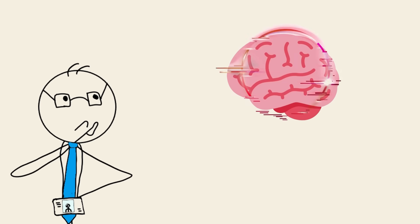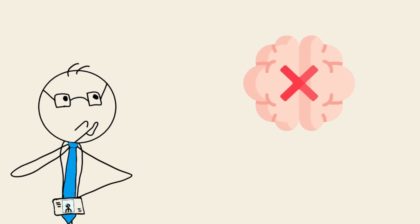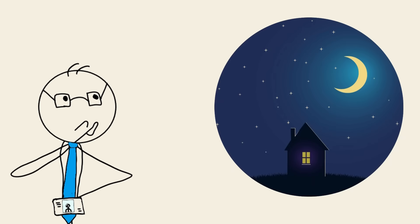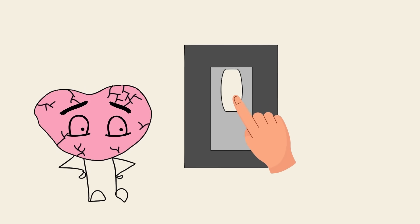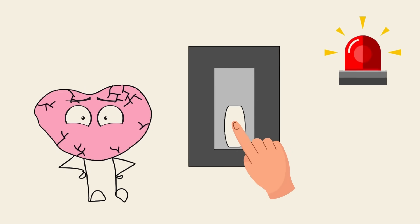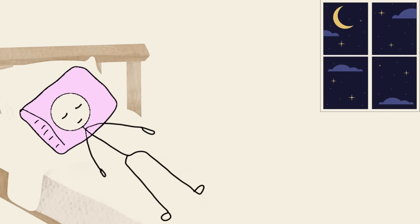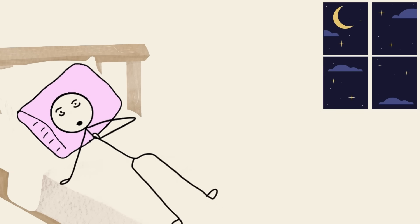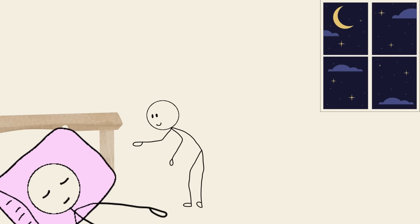Researchers suspect it's a glitch in the brain's auditory neurons misfiring as it shuts down for the night. Basically, your brain hits the lights, but forgets to switch off the alarm system. And while it's harmless, many people fear it's a stroke or aneurysm the first time it happens. Imagine your body whispering, good night, but your brain yelling, surprise.